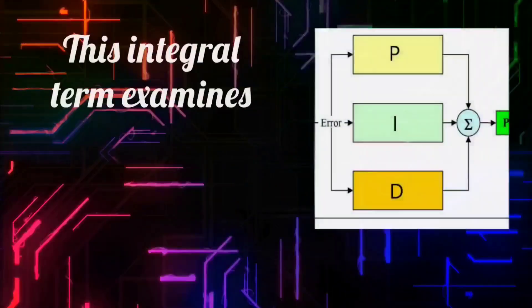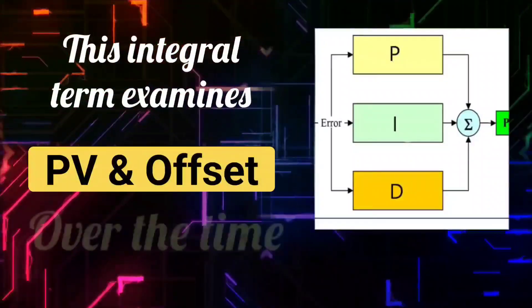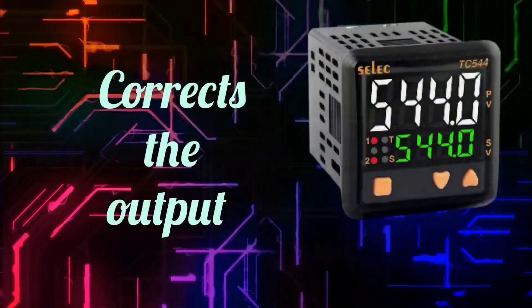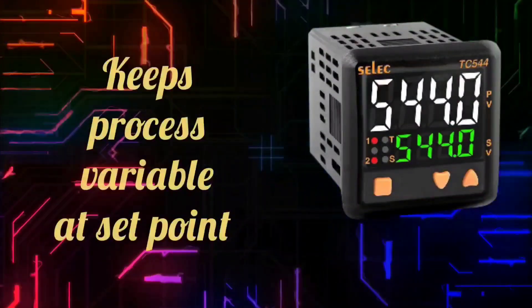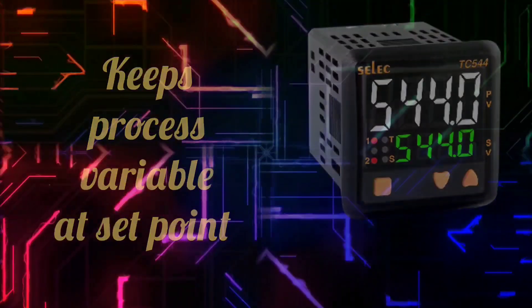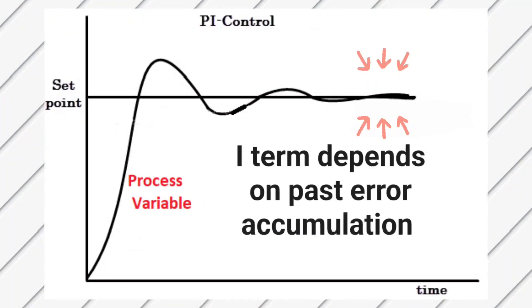This integral term examines the process variable and the offset over the time. And by correcting the output, the value of the process variable is brought to the set point. You can also see this from this graph. So the integral term, in a way, depends on the accumulation of past errors.